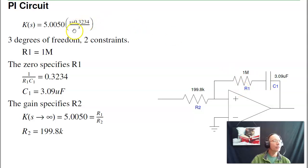To design it, I've got three degrees of freedom, two constraints, somebody's arbitrary. I just picked R1 to be 1 meg. As S goes to infinity, I begin a 5. S goes to infinity, this is a short, so that becomes 199K. And then the zero, 1 over RC is 0.3, C is 3 microfarads.